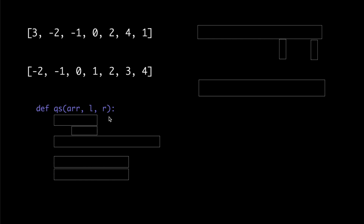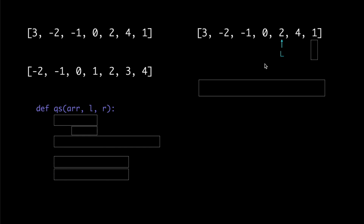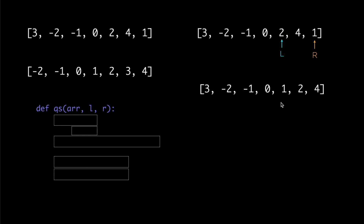Quicksort implements a recursive function, which we're going to call qs, that takes three arguments: the given array, l and r. l and r are two integers that represent the indexes showing the section of the array that we want to sort. So for example, if l is 4 and r is 6, after running this function, the section of the array between l and r will be sorted.